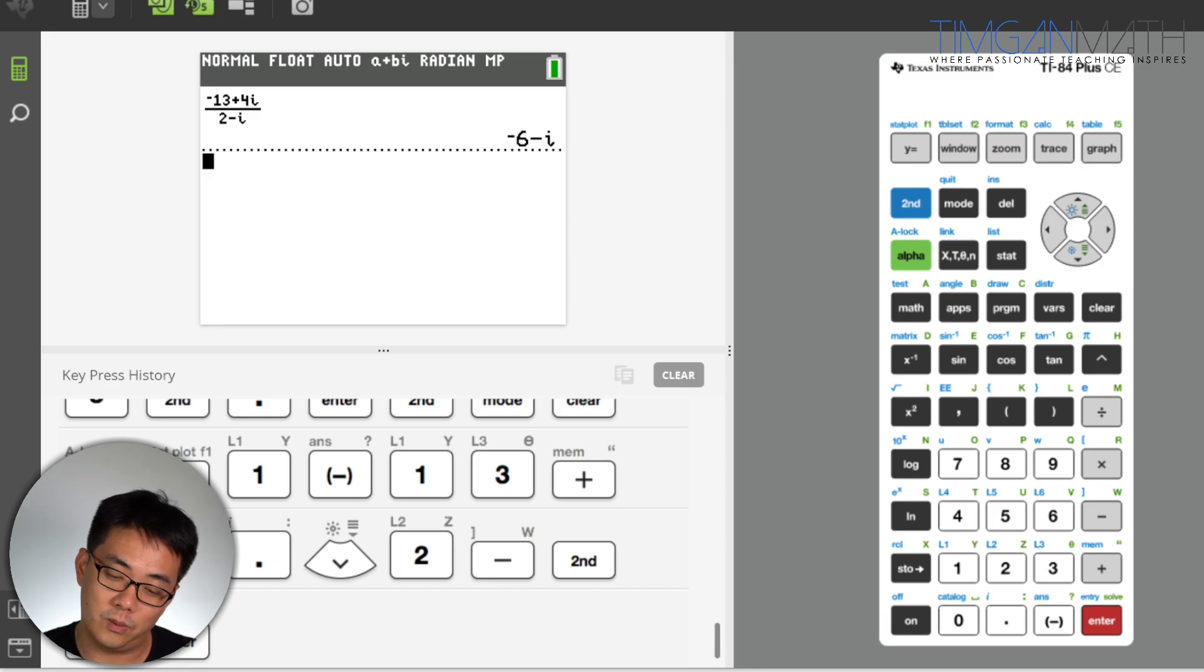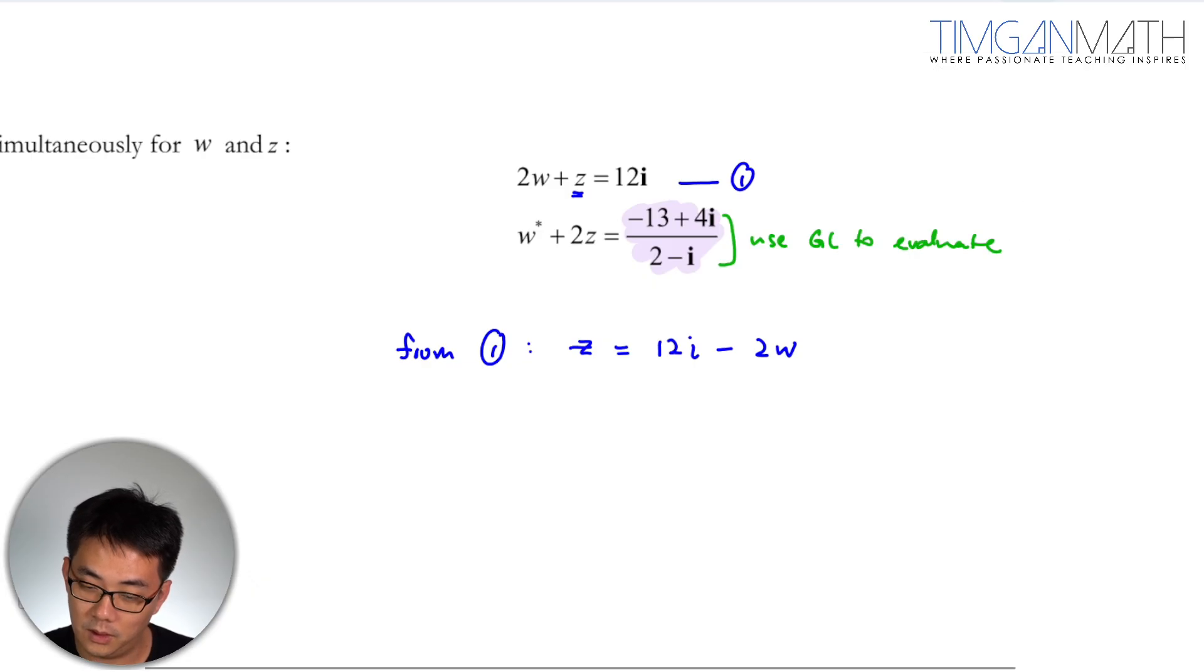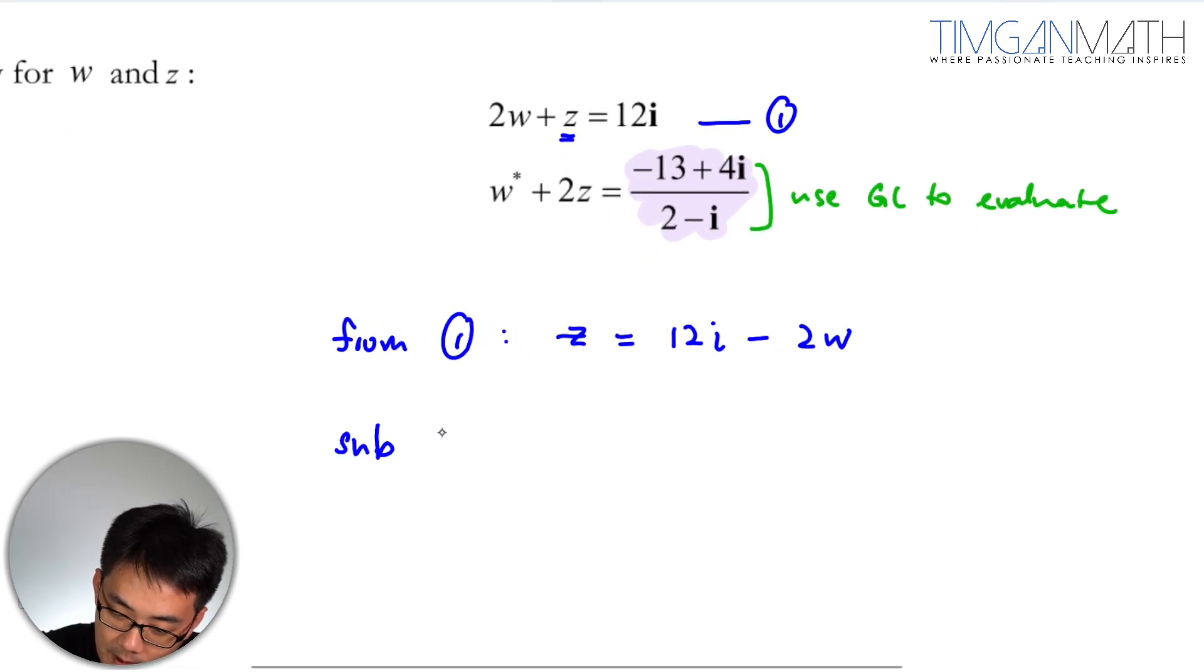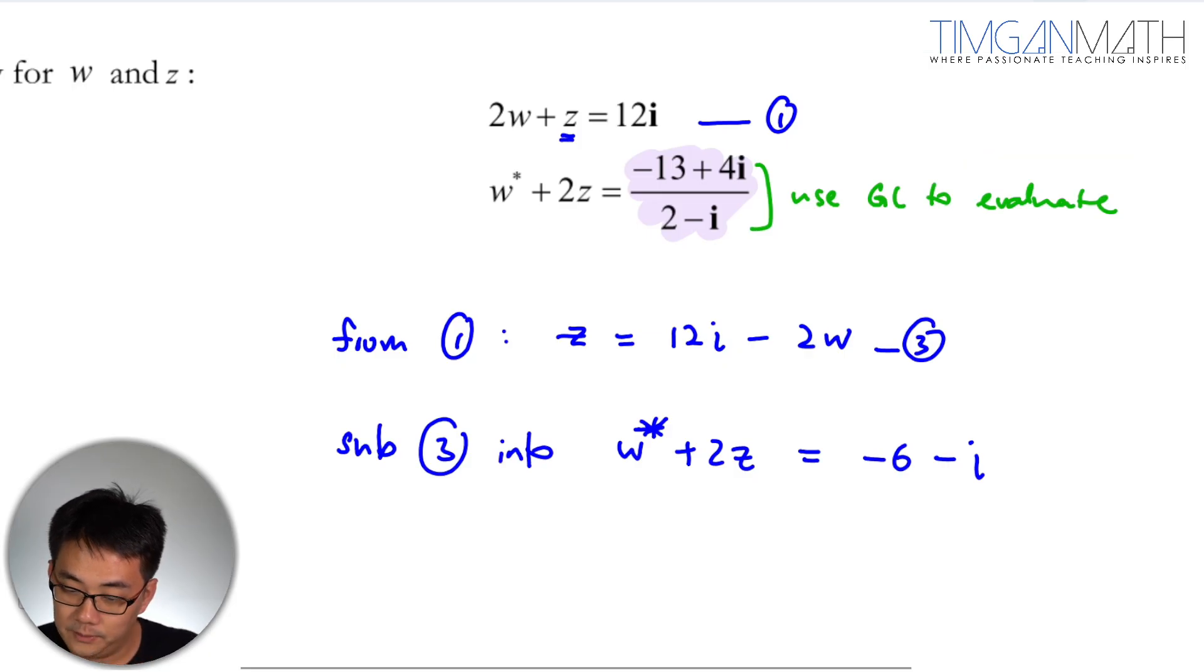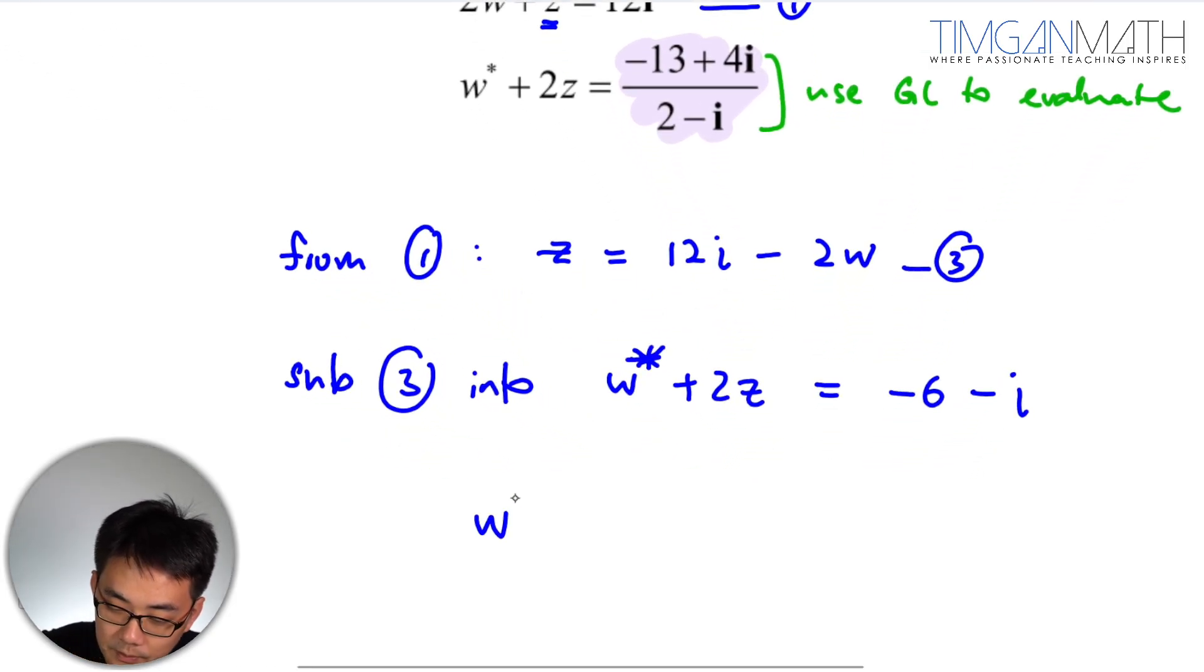So it's minus 6 minus i. So substitute this into equation 2. This is W plus 2Z equals 12i minus 2W, which gives minus 6 minus i.